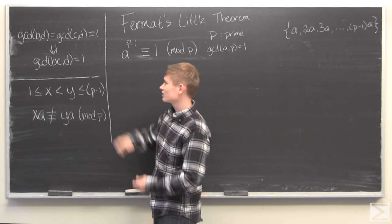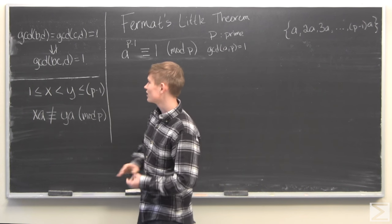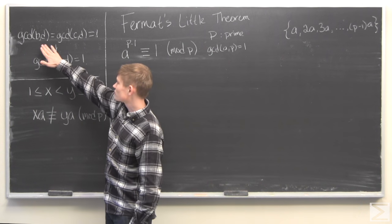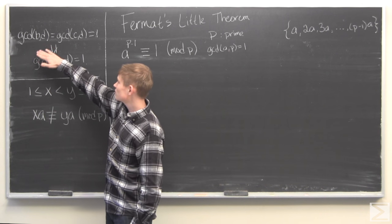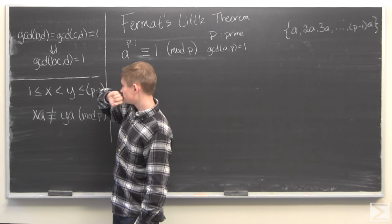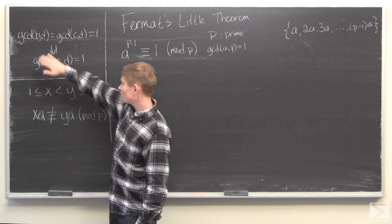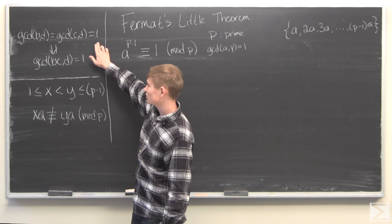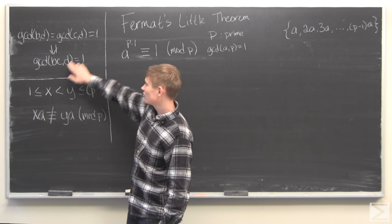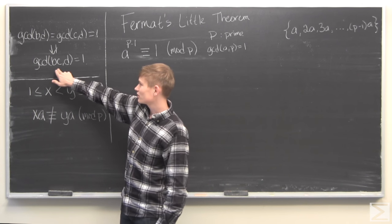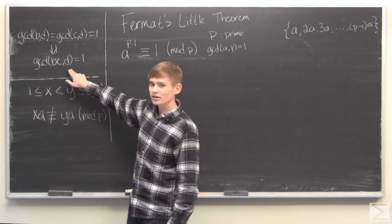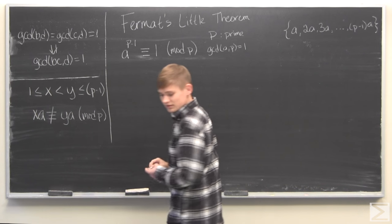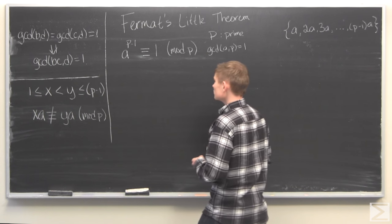The first lemma is this: if you have natural numbers b, c, and d, and if b and d are relatively prime and c and d are relatively prime, that means the product b times c is relatively prime to d.